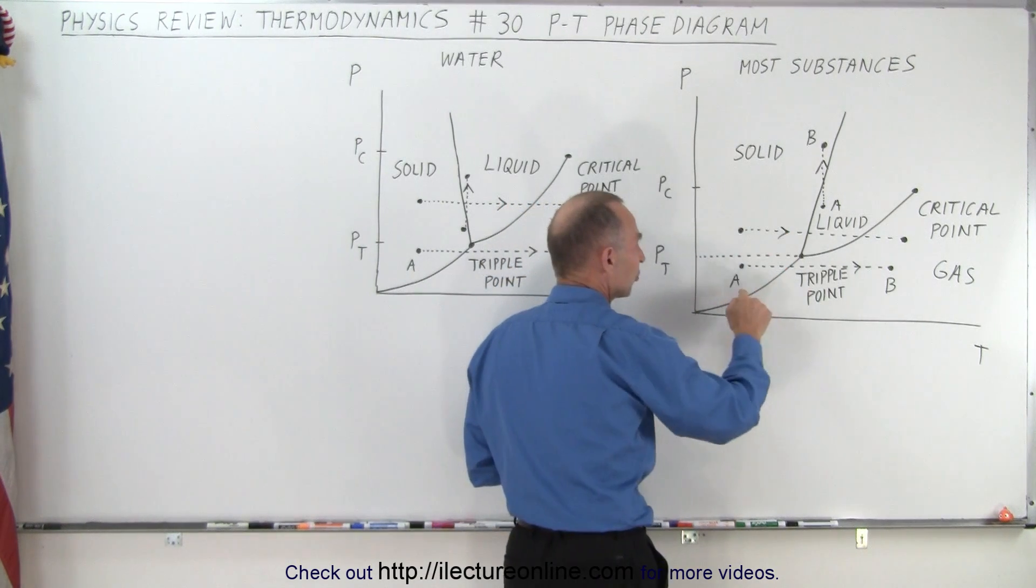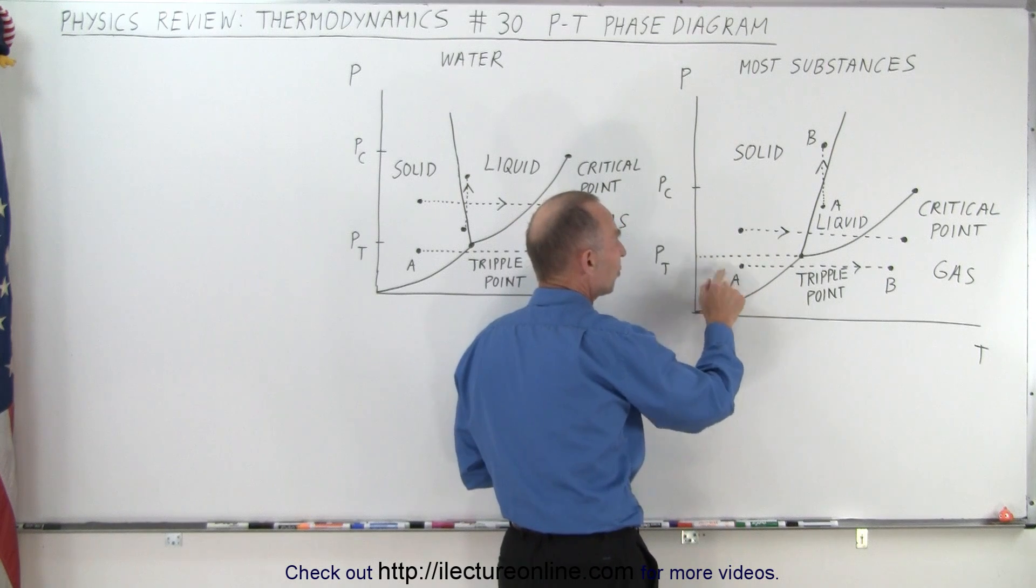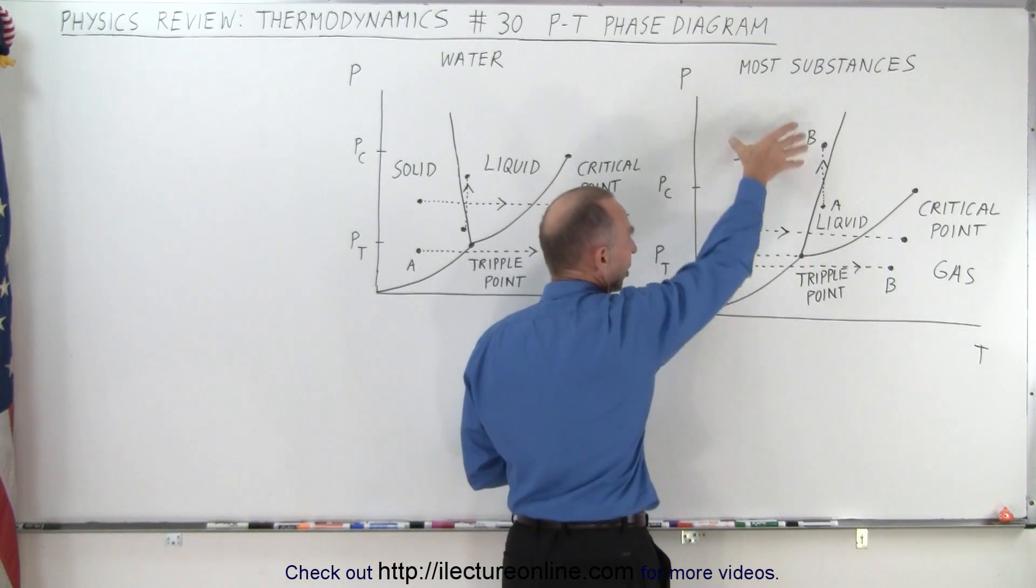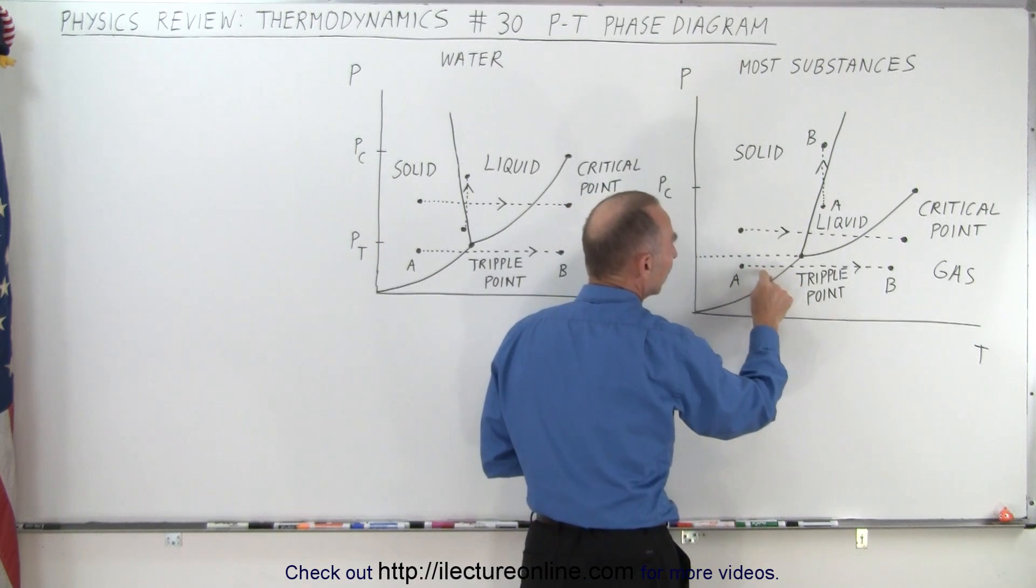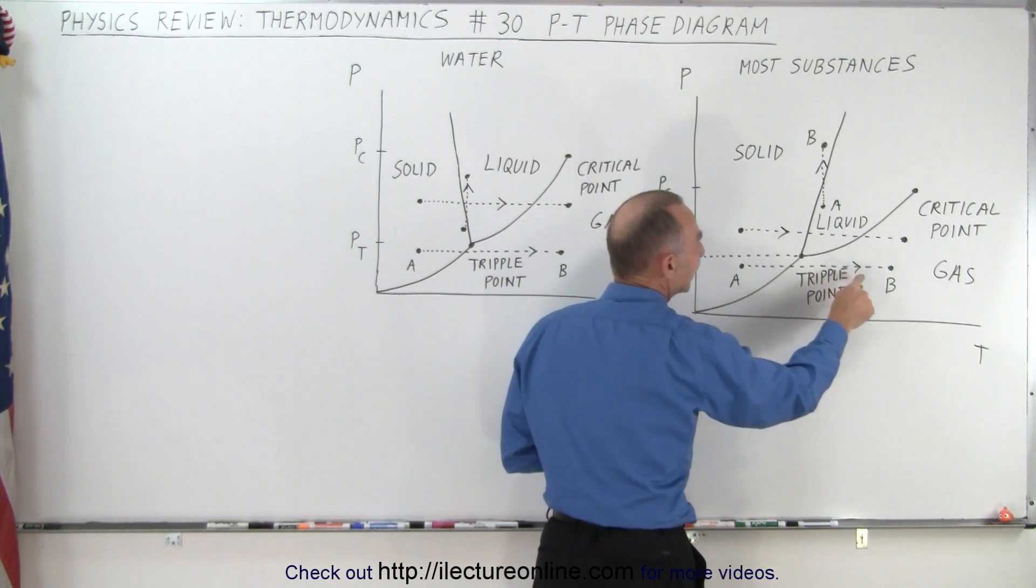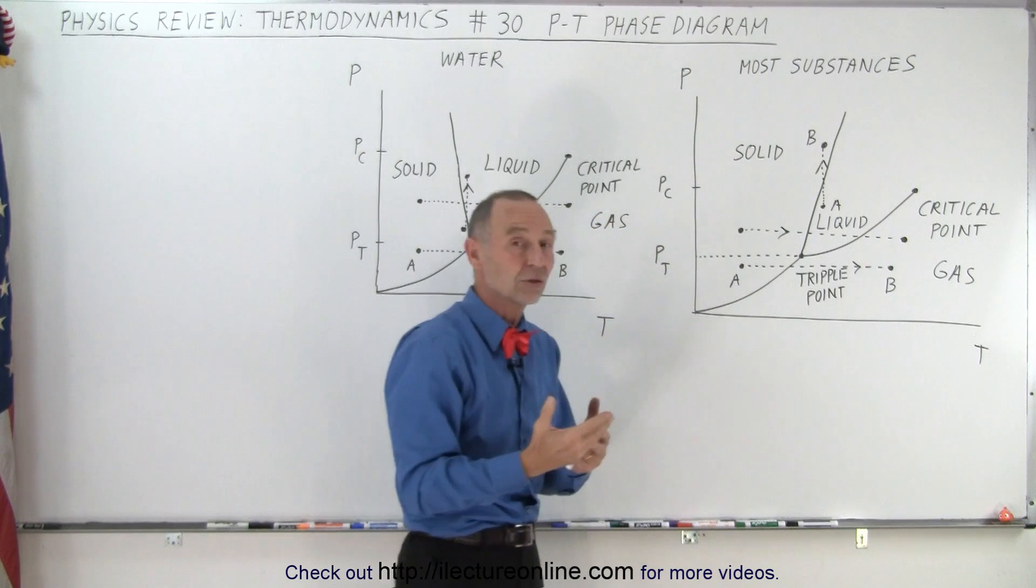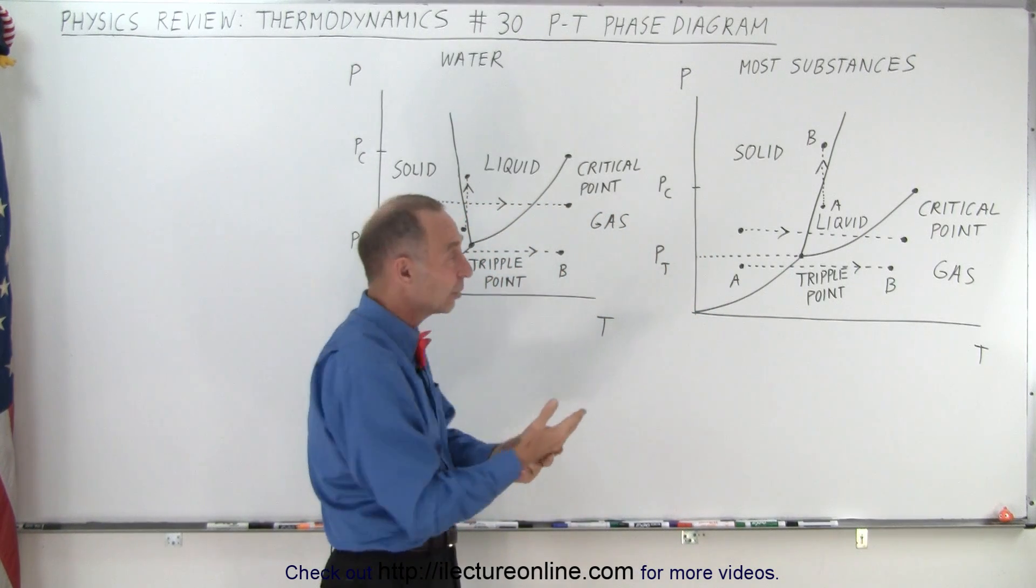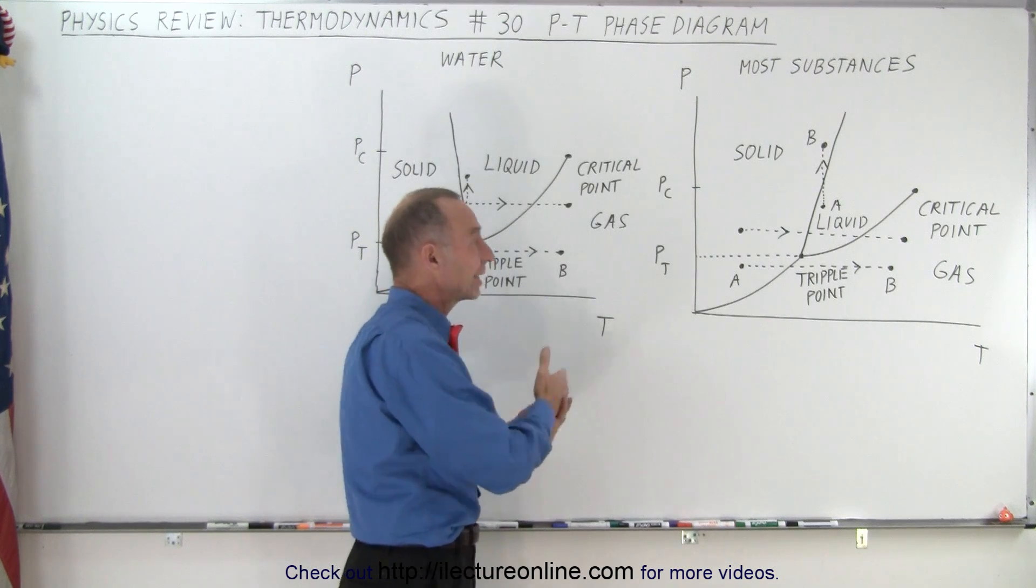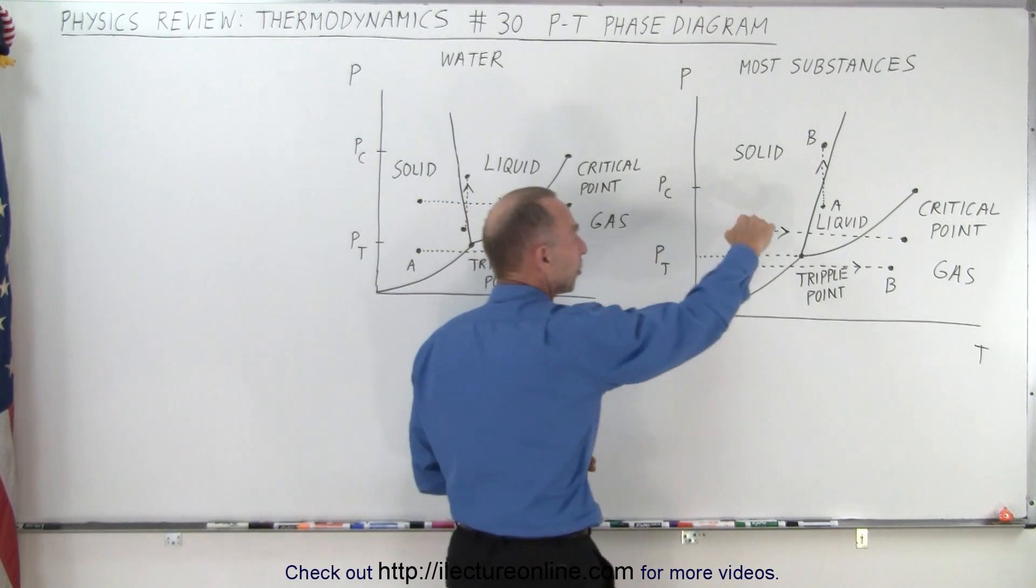Notice that at low enough pressures, if we start with a substance in solid state, and then the temperature increases, we go directly from the solid state to the gas state. That's called sublimation, so instead of the substance first turning into a liquid before it turns into a gas, it goes directly from the solid state to the gas state, and that happens at very low pressures.